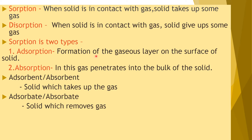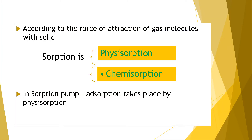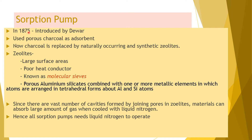Adsorption is the formation of a gaseous layer on the surface of a solid, while absorption is when the gas penetrates into the bulk of the solid. The solid which takes up the gas is called the adsorbent or absorbent accordingly. According to the force of attraction of gas molecules within the solid, sorption is categorized as physisorption and chemisorption. In a sorption pump, adsorption takes place by physisorption.